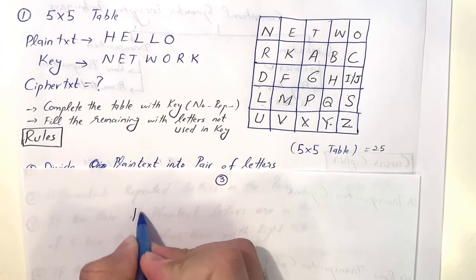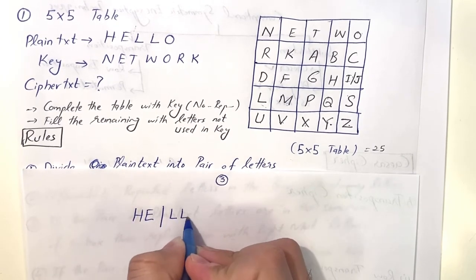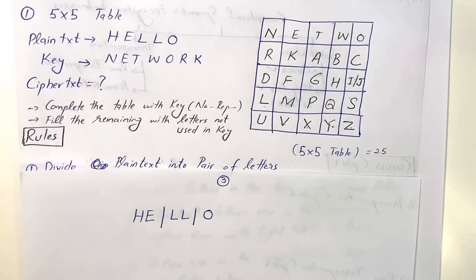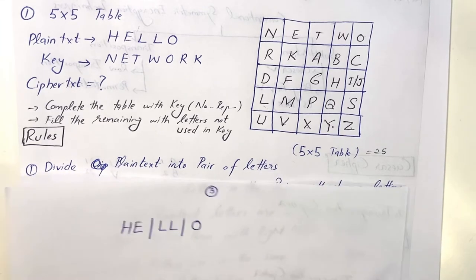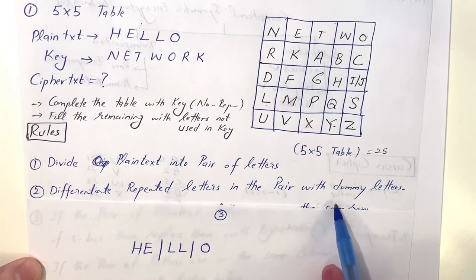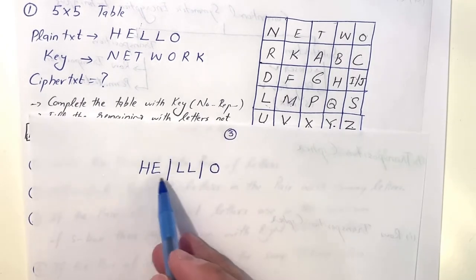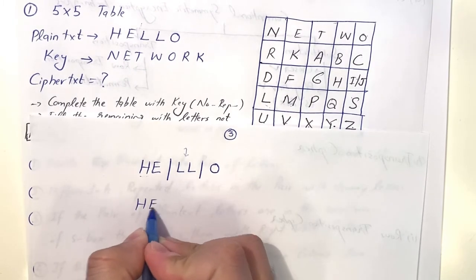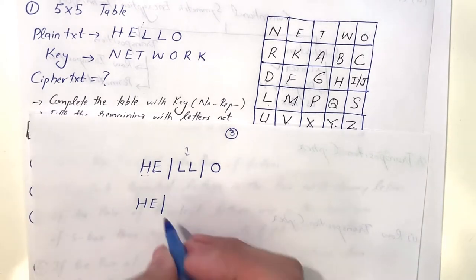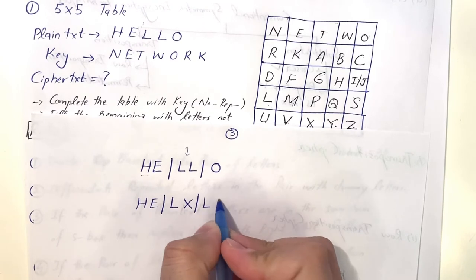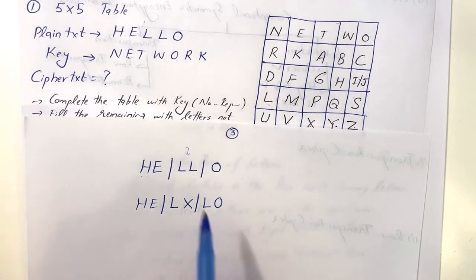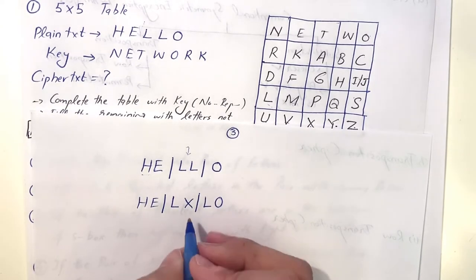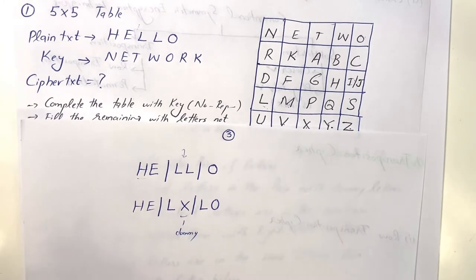For permutation cipher: the plain text is 'WELCOME' and the key must be the same length as the plain text — in this case, 7 bits. Key is 3 2 6 4 1 7 5. Number the plain text positions 1 through 7, then reorder the letters according to the key: position 3 = L, position 2 = E, position 6 = M, position 4 = C, position 1 = W, position 7 = E, position 5 = O. The ciphertext is 'LEMCWEO'. In the class assignment we will see how to decrypt this.